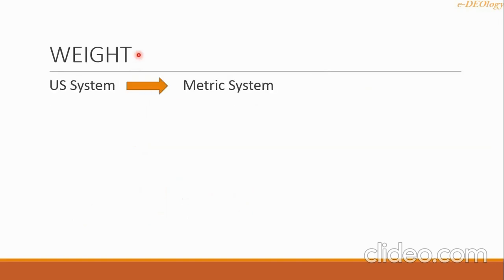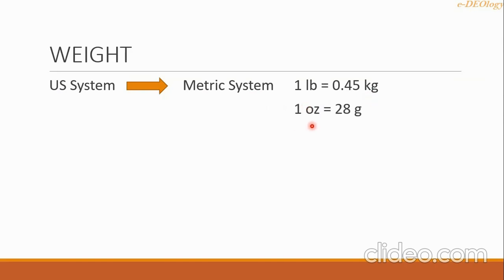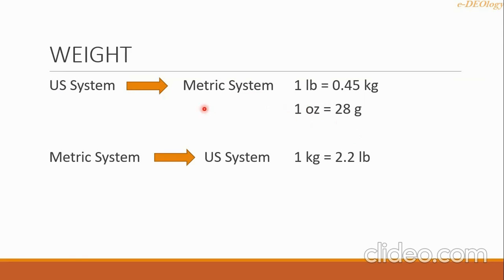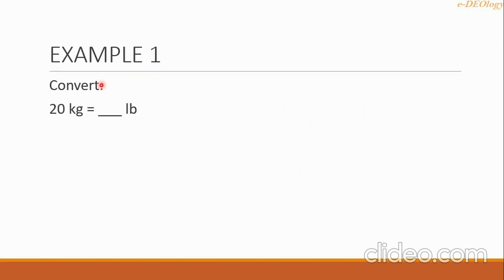Let's proceed with the weight. From US system to metric system, the first conversion is 1 pound equals 0.45 kg. The second is 1 ounce equals 28 grams. From metric system to US system, 1 kg equals 2.2 pounds.